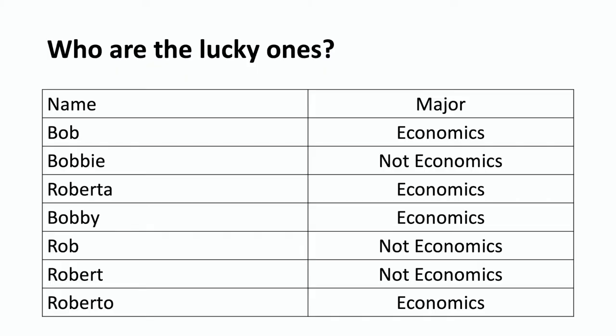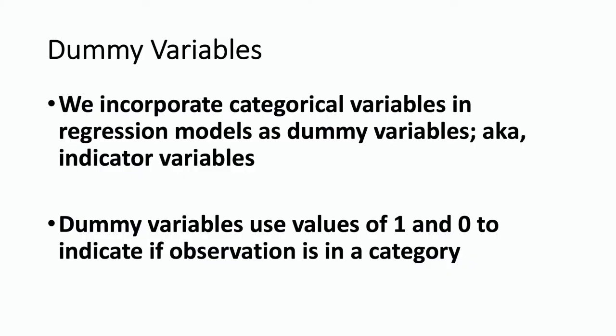There are a variety of ways that you can code a categorical variable. Here's a second table showing the same information coded a little differently — instead of yes or no, under major you see economics or not economics. To incorporate a categorical variable like a person's major into a regression model, we use what's called a dummy variable, also known as an indicator variable.